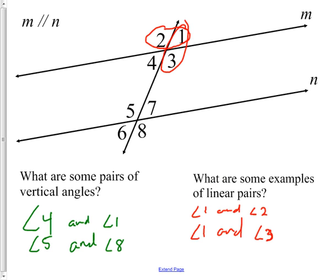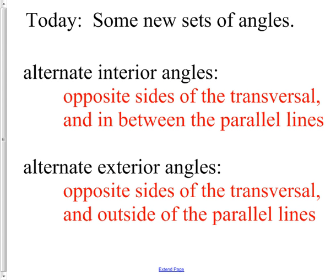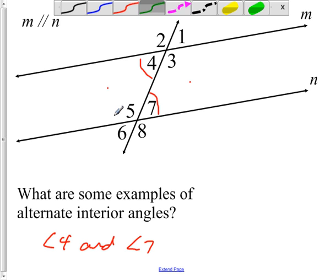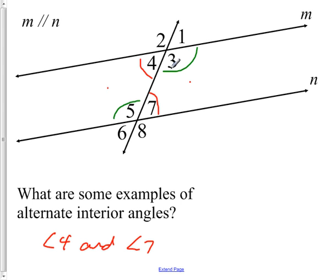This is a refresher of what we've learned in the past. Now there are some new vocabulary terms. The first two we'll focus on are alternate interior angles and alternate exterior angles. Alternate interior angles are on opposite sides of the transversal and they're in between the parallel lines. Examples would be like angles four and seven, and also angles five and three — those are both pairs of alternate interior angles.